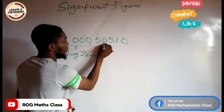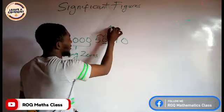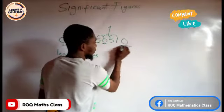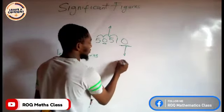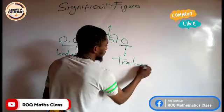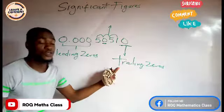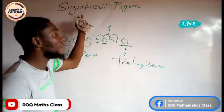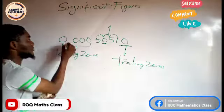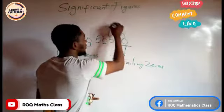A zero in between two numbers is a significant figure. And the last zero — that is called a trailing zero. A trailing zero may or may not be a significant figure. It is only significant if we have a decimal point. Since we have a decimal point, all of these are also significant figures.